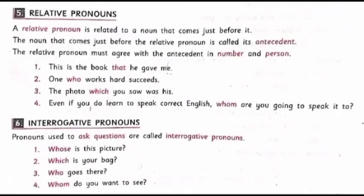A relative pronoun is a pronoun that is related to a noun that comes just before it. For example: 'This is the book that he gave me.' Here, the relative pronoun is 'that,' related to the noun 'book.' Another example: 'One who works hard succeeds.' Here, 'who' is the relative pronoun, related to the pronoun 'one.'